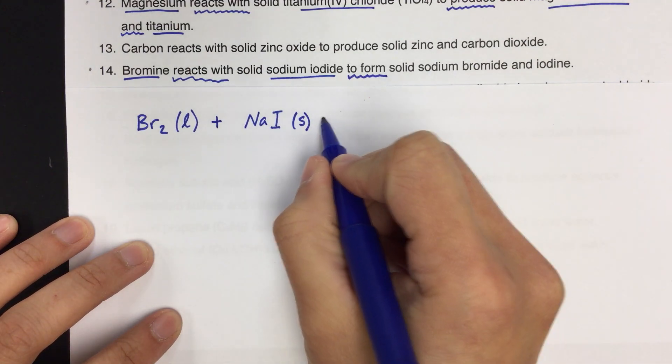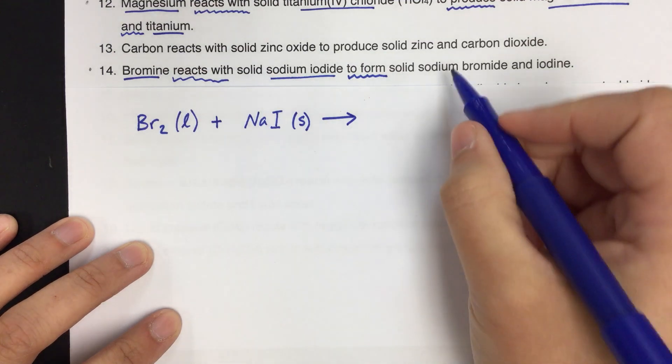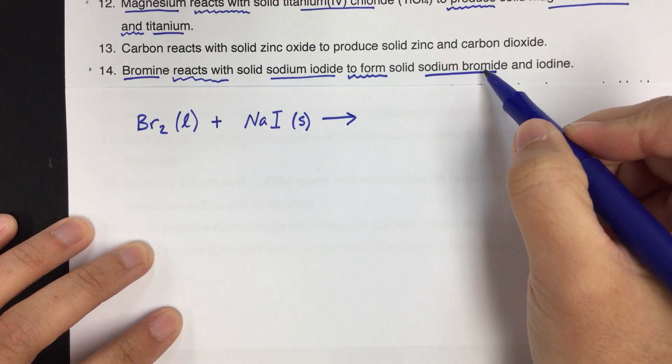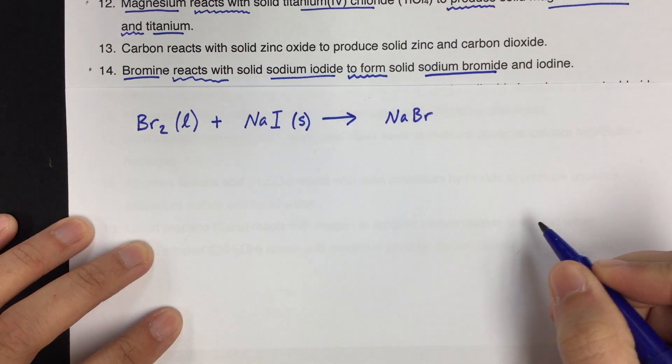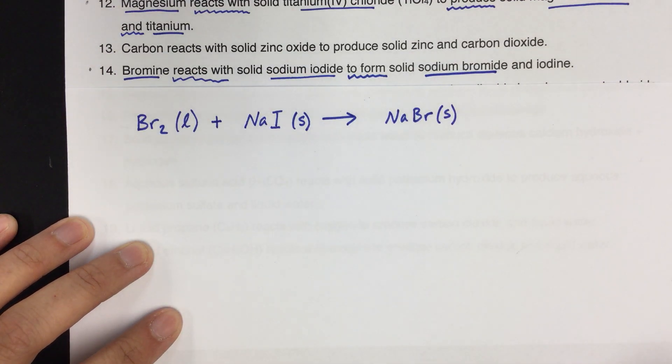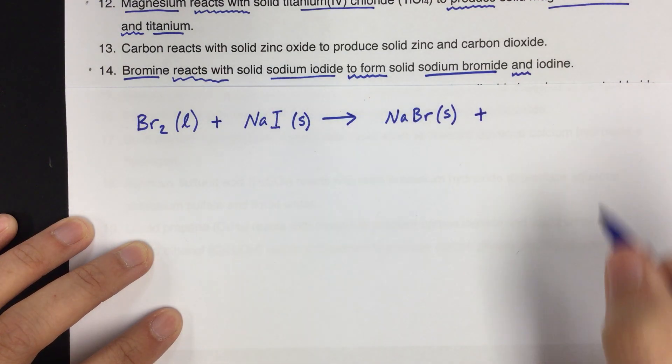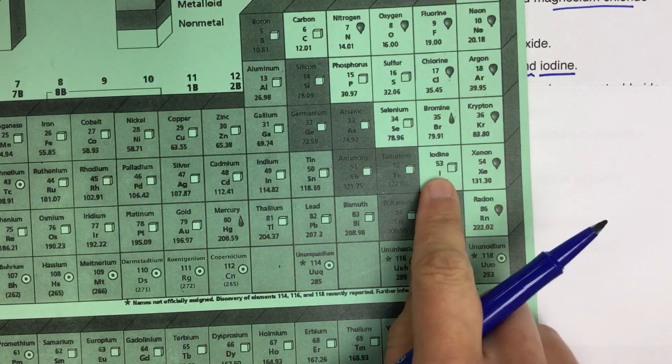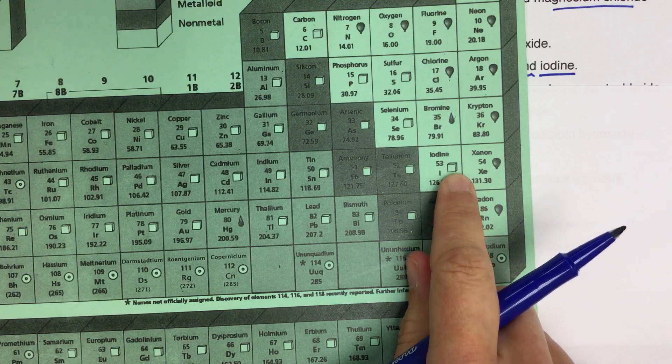So we get that. 'To form,' so same as 'to produce,' some new stuff. Sodium bromide. So Na plus, Br minus. It's going to be NaBr. And also it gives us the phase is solid. So 'and,' iodine is just an element, but it is special. It's diatomic. So the formula is going to be I2, and then the phase is solid.